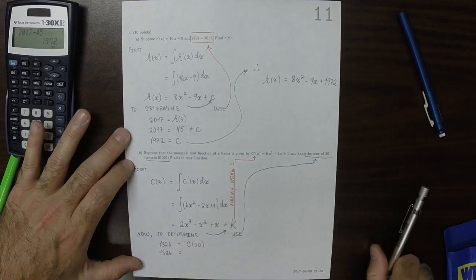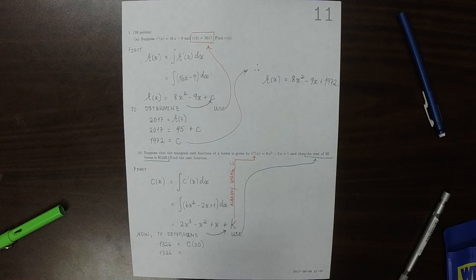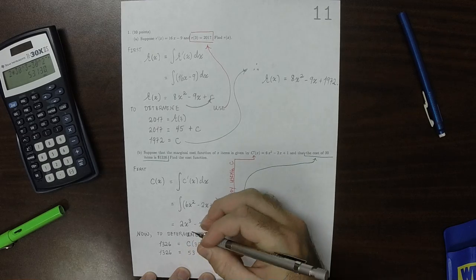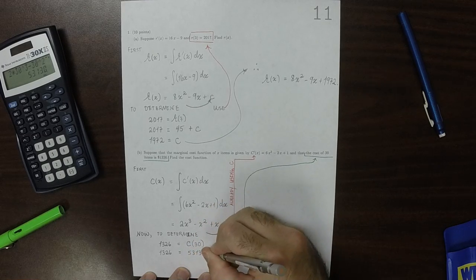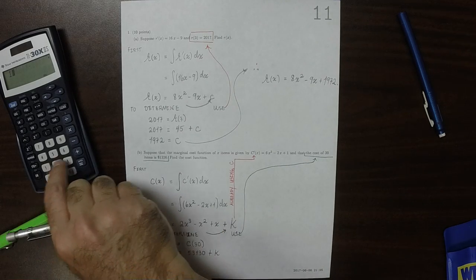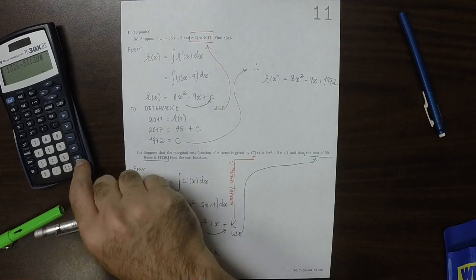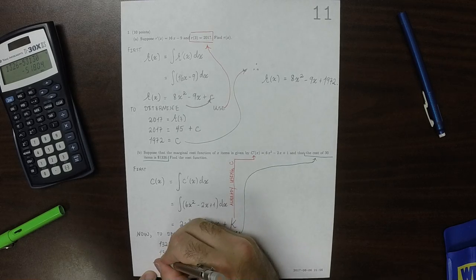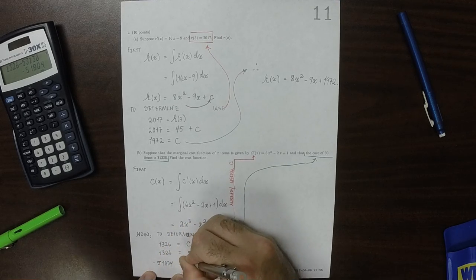1326 is, plug in 30 into there, 2 times 30 cubed, minus 30 squared, plus 30, is 53130 plus k, and then move the 53130 to the other side, is negative 51804 equal to k.